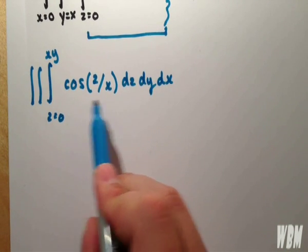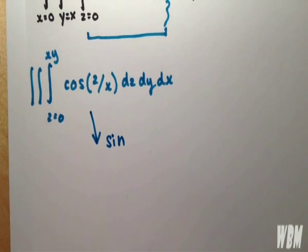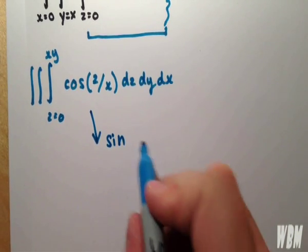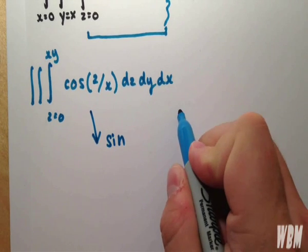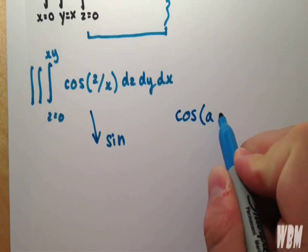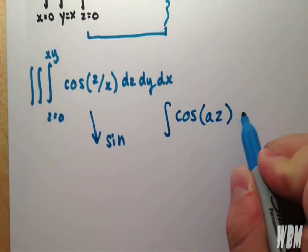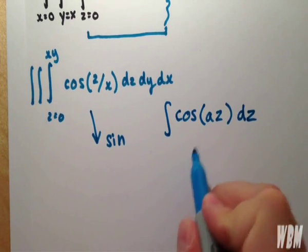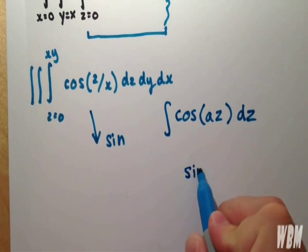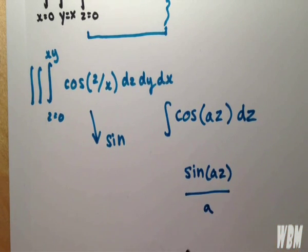So as we know, cos integrates to sine. Now, cos of az, and we're integrating with respect to z, then that becomes sine of az over a plus a constant.